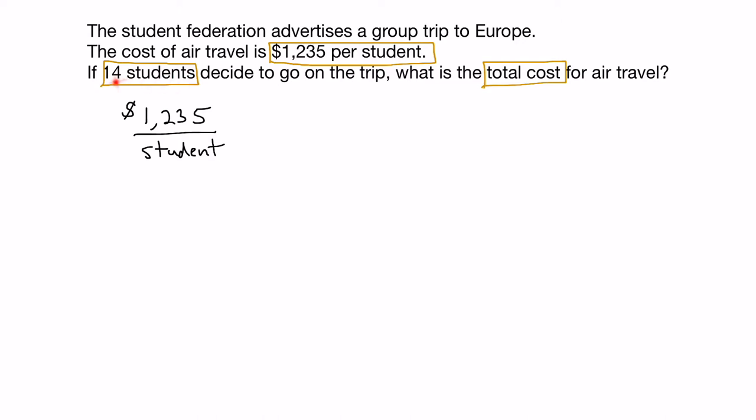Next we'll get our 14 students, so we write it as 14 students. And then we ask ourselves, what do we have to do to these two numbers in order to equal our total cost? Well, if one student goes on the trip, then it will be $1,235. So if 14 students go, it's going to be a lot more than that. So what we're going to have to do here is multiply these two numbers.